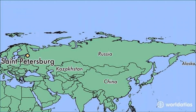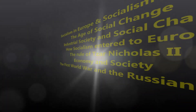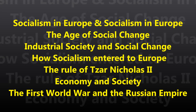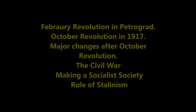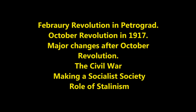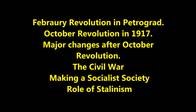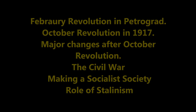Let us recall what we have learned today. We discussed the age of social change, socialism in Europe and the Russian Revolution, industrial society and social change, the coming of socialism to Europe, the rule of Tsar Nicholas II, the Russian Revolution, and the First World War and the Russian Empire. In the next session, we are going to understand about the February Revolution in Petrograd, the October Revolution of 1917, major changes after the October Revolution, the civil war, the making of a socialist party, and the role of Stalin in making Russia a modern nation.